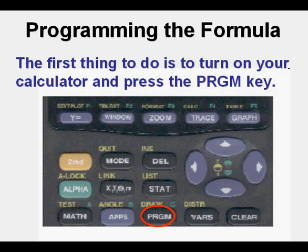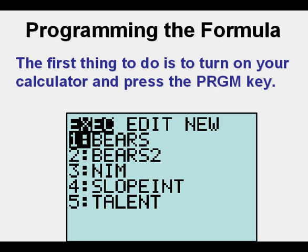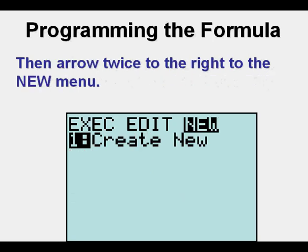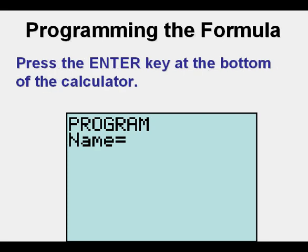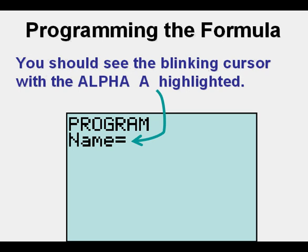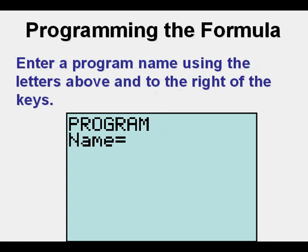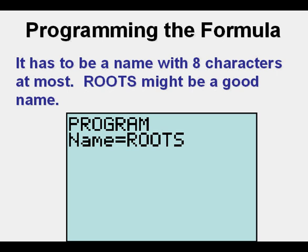You start by pressing the program key PRGM. You may have a list of programs here already or have no programs installed on the calculator. Arrow twice to the right to get to the New menu, then press the Enter key. You should see the blinking cursor with the Alpha A highlighted. Enter a program name using the letters above and to the right of the keys — it has to be eight characters or fewer. 'Roots' might be a good name for this one. Press Enter.